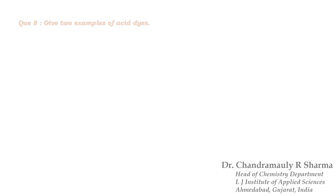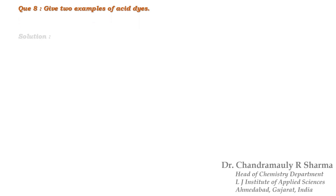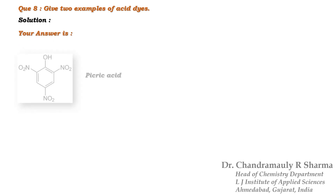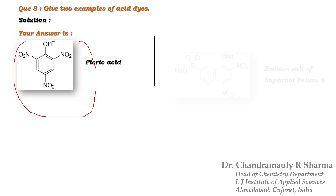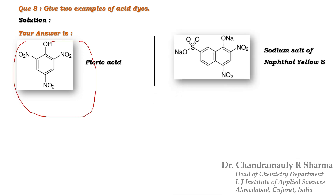Next question: Give two examples of acid dyes. The first one is picric acid and its structure is just given on your screen. The second is the sodium salt of naphthol yellow S, and its structure is also given.